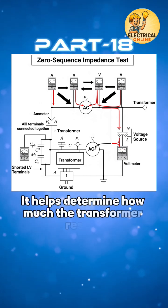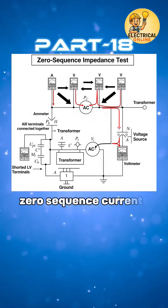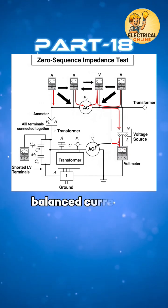It helps determine how much the transformer resists zero sequence currents, which behave very differently from normal balanced currents.